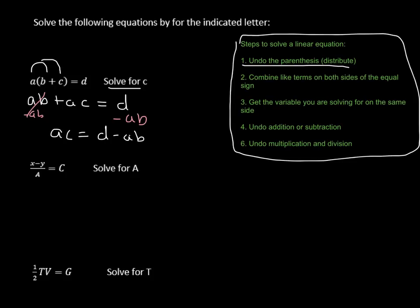Again, not like terms, so you can't put them together. And now it says undo any multiplication or division. So again, we're trying to get this c by itself, right? What's next to it? There's an a right there. So we're going to divide by a, and we're going to divide by a. And we end up getting c equals d minus ab, all divided by a.